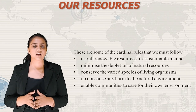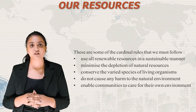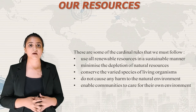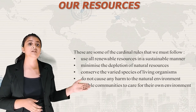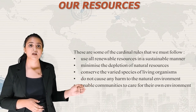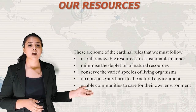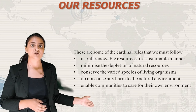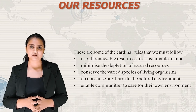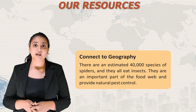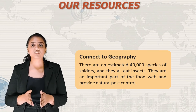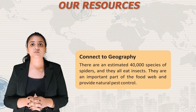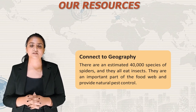There are some cardinal rules that we must follow: use all renewable resources in a sustainable manner; minimize the depletion of natural resources; conserve the varied species of living organisms and do not cause harm to the natural environment; and enable communities to take care of their own environment. Interestingly, there are an estimated 40,000 species of spiders and they all eat insects — they are an important part of the food web and provide natural pest control.